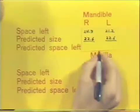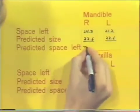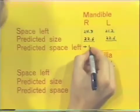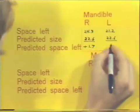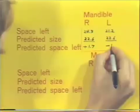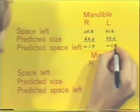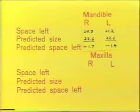The final step in the mixed dentition analysis is to predict the space left. On the right side, it's a positive 1.7 millimeters. However, on the left in our patient, it's a negative 1.4 millimeters. This means that on the patient's right side, there's 1.7 millimeters of space left over after these three teeth erupt, but on the left side, our child is 1.4 millimeters short of space.